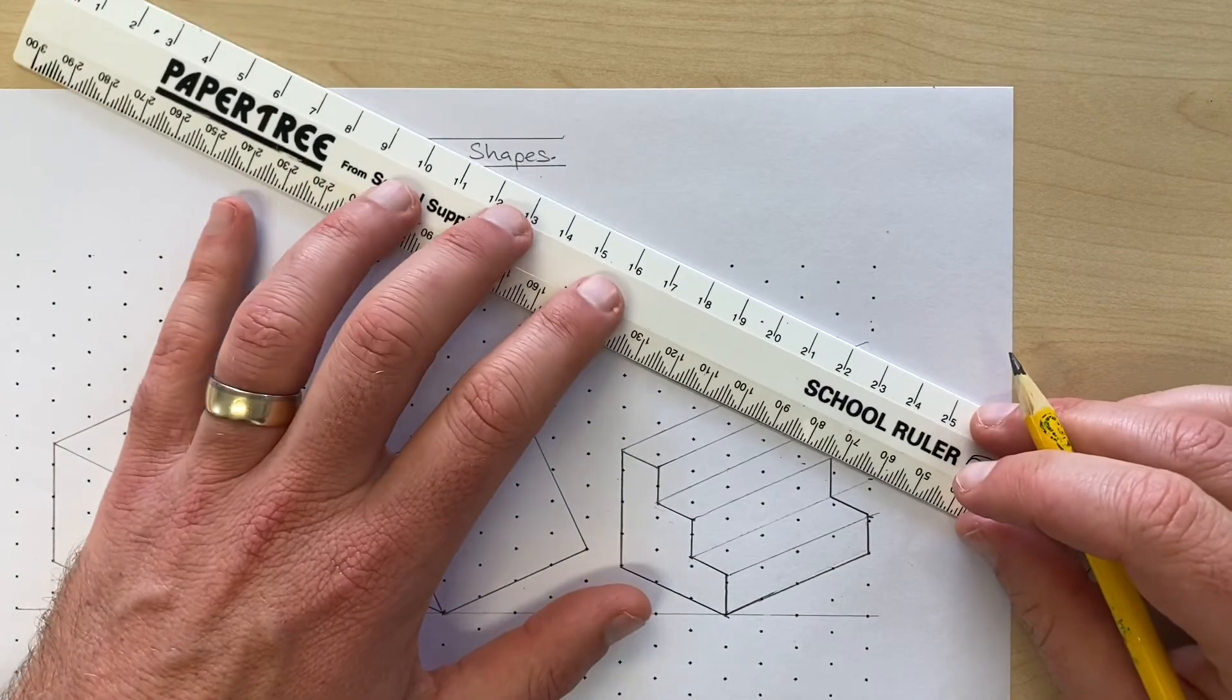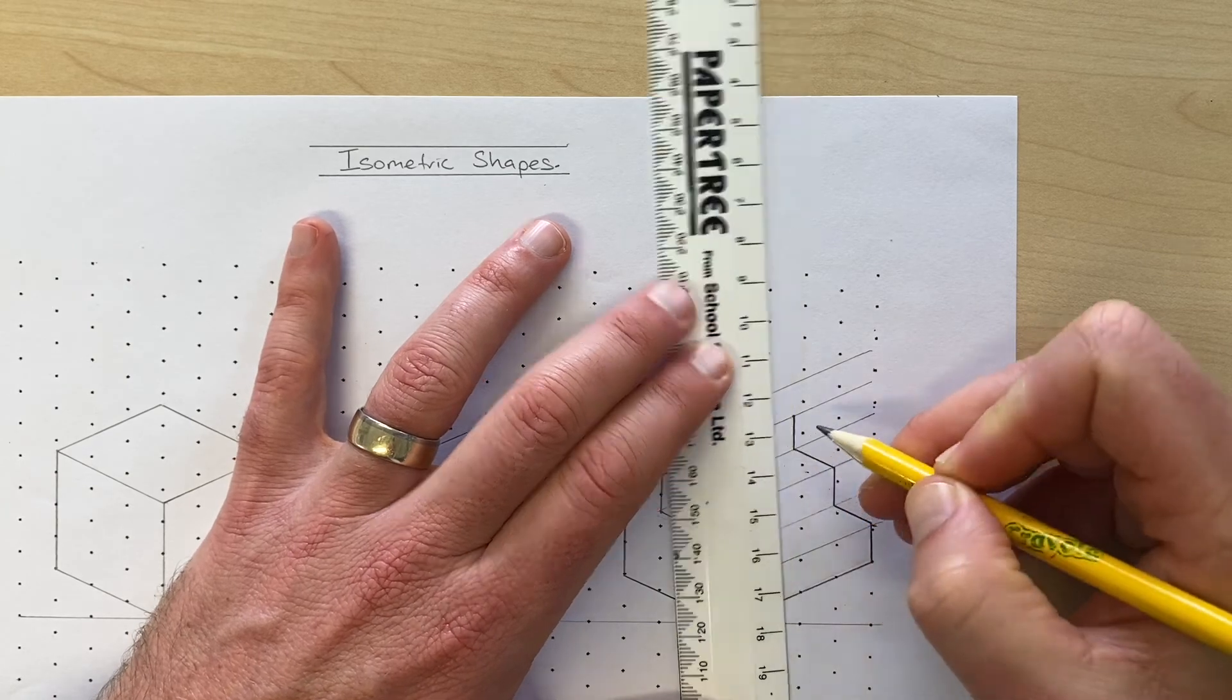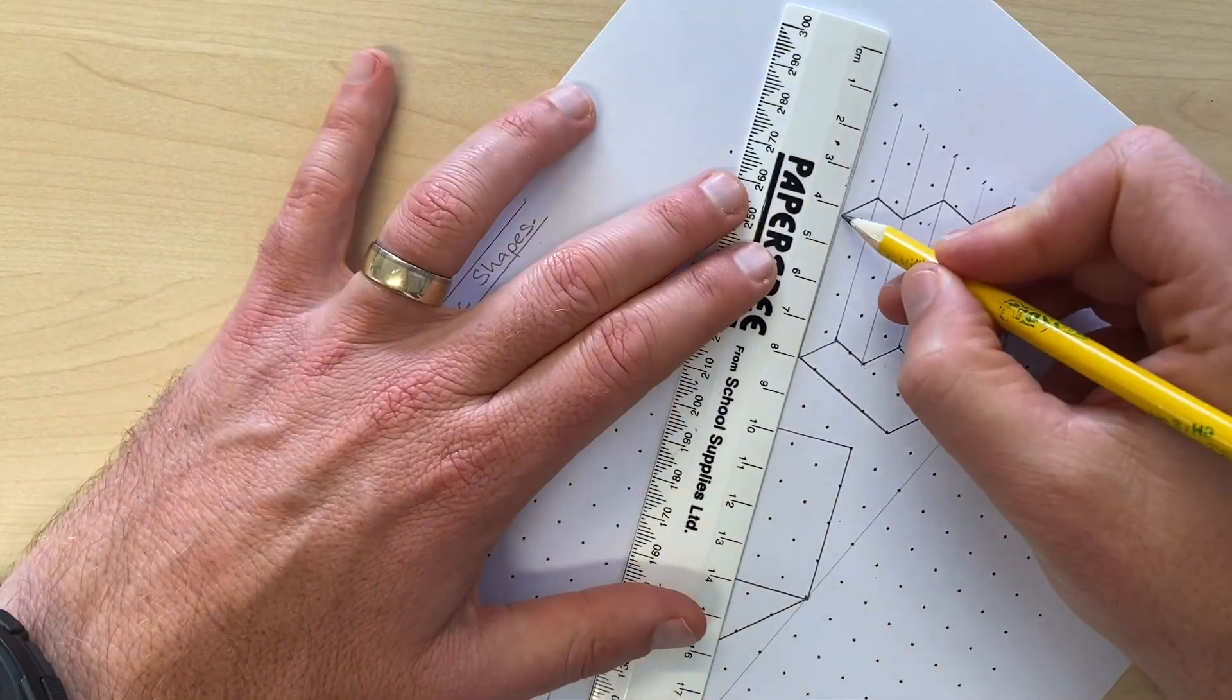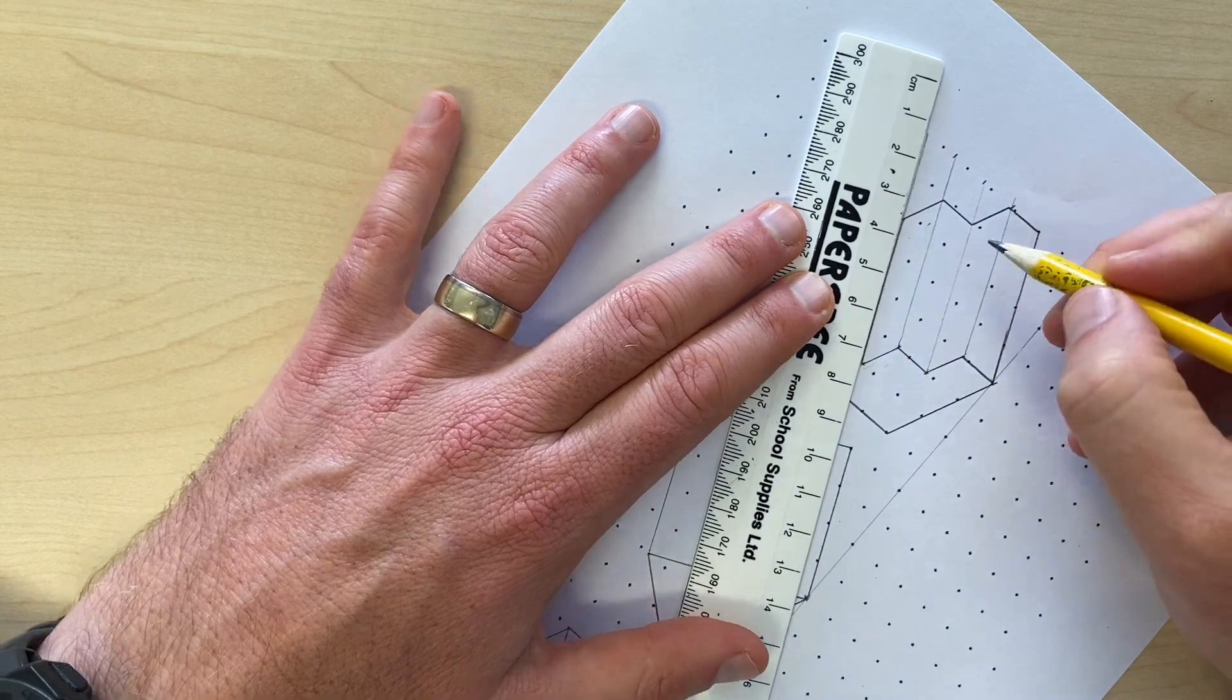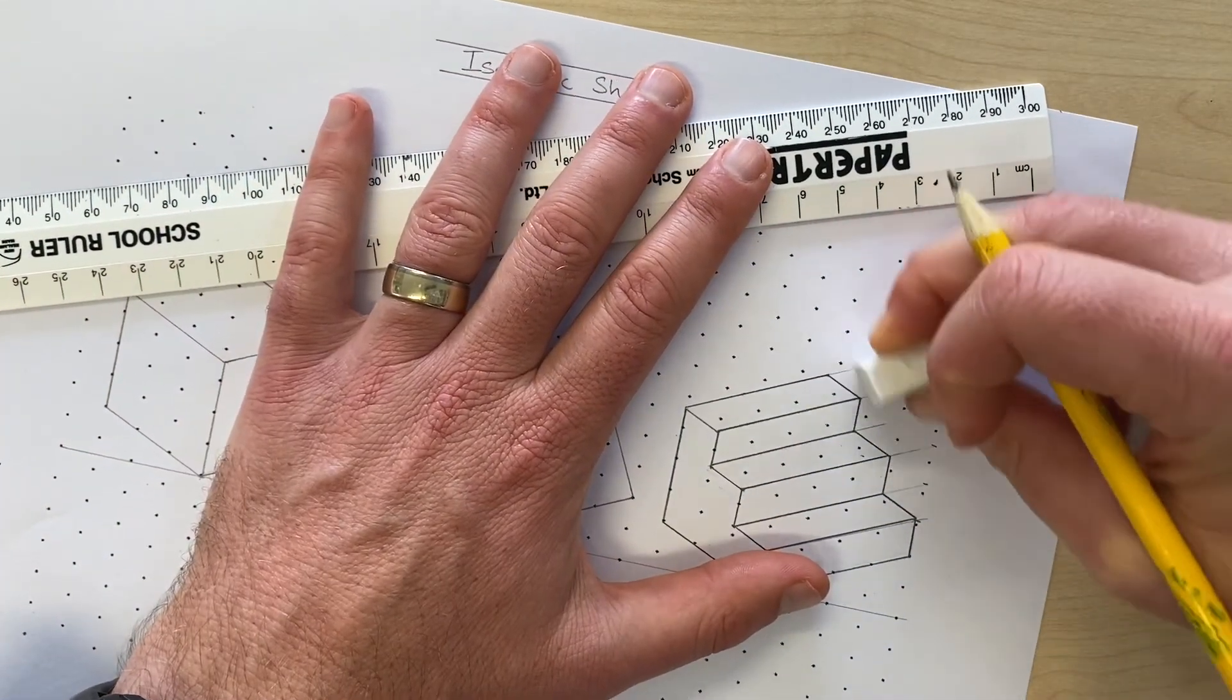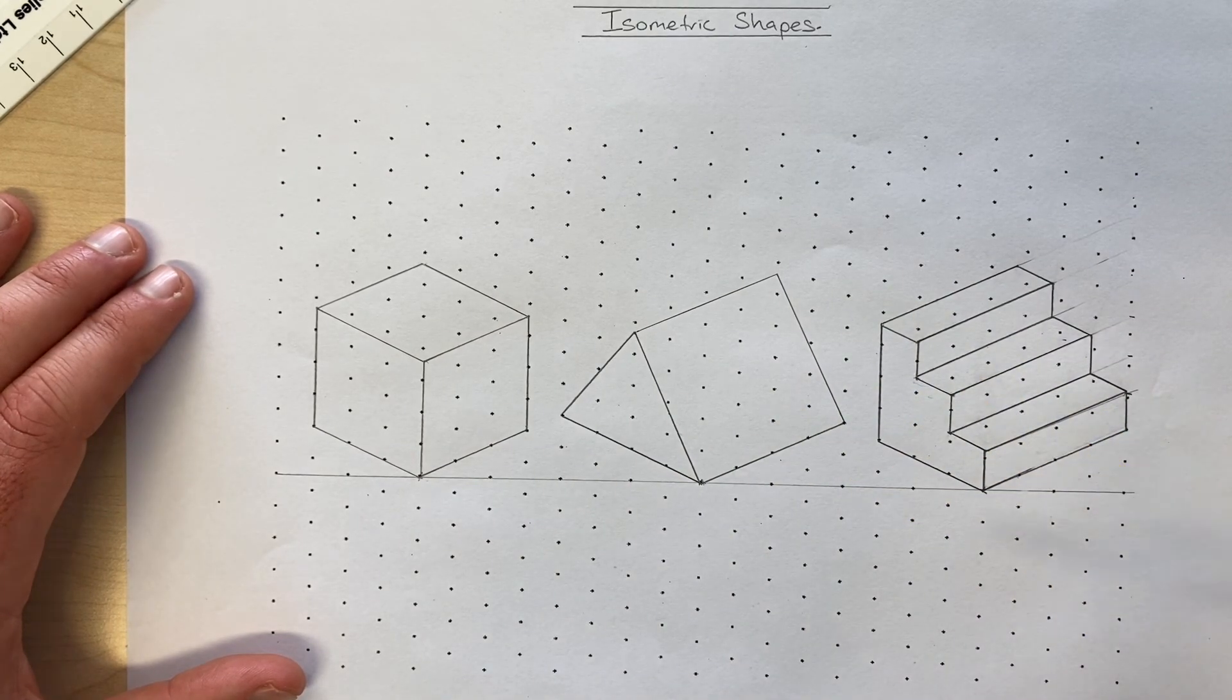Rise, staying parallel at all times with my isometric lines. Here's my run. Rise and lastly run. Here is my staircase. I'm going to go over these and just make them a bit darker. I can rub those out if I like. You don't have to, just tidy things up a bit. And what we've done here, we've drawn an isometric cube, an isometric triangular prism, and a small isometric staircase.